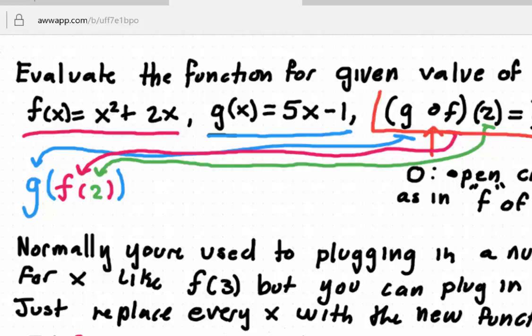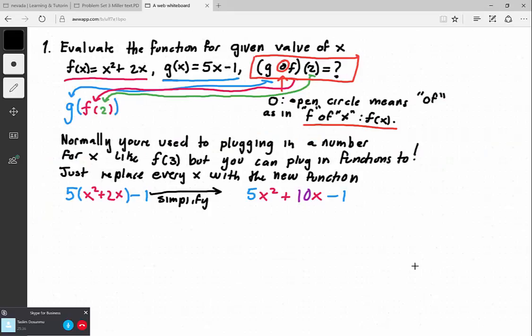This circle right here, this little o, what that means is it's 'of' - as in f of x. That's how you write it. So what that means is in the place of the x, you're going to replace it with whatever function you're putting inside of it. In this case, you want to put the f of x inside of your g of x.